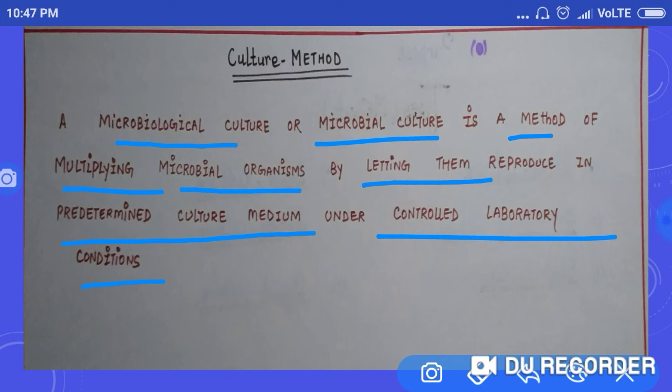So, culture method — also called microbiological culture or microbial culture — is a method of multiplying microbial organisms by letting them reproduce in predetermined culture medium under controlled laboratory conditions. We get a sample from any swab or specimen, obtain the inoculum, and then pour it into culture media, which helps the microorganisms to grow. That is what we call the culture method.